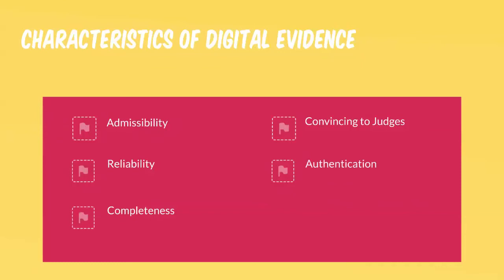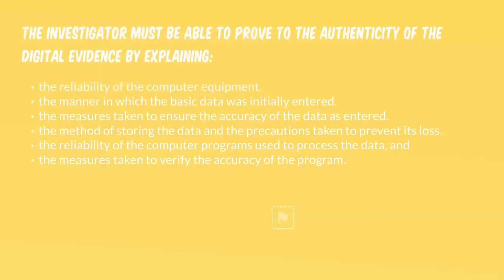The fifth characteristic is authentication — the evidence must be real and related to the incident. Courts largely concern themselves with the reliability of digital evidence. The investigator must be able to prove the authenticity of the digital evidence by explaining: the reliability of the computer equipment, the manner in which basic data was initially entered, measures taken to ensure the accuracy of the data as entered, the method of storing the data and precautions taken to prevent its loss, the reliability of the computer programs used to process the data, and measures taken to verify the accuracy of the program.